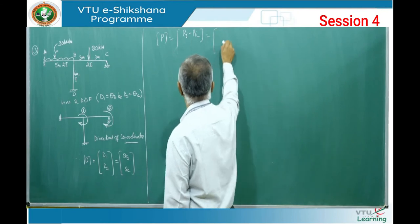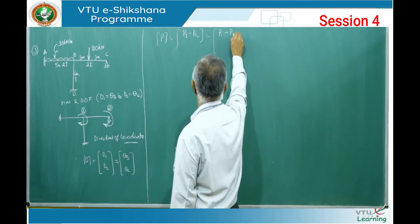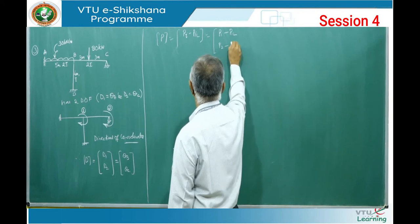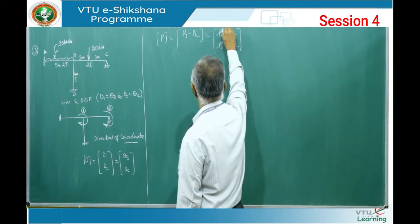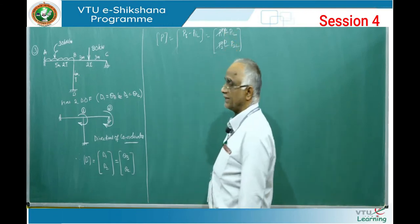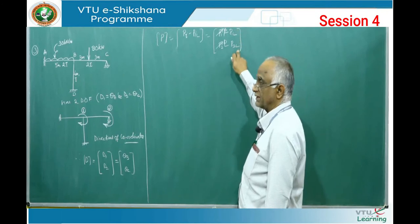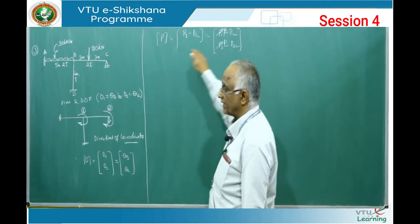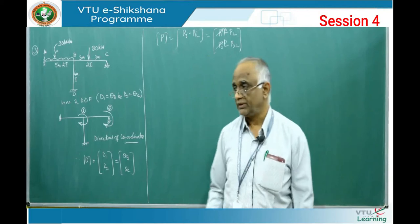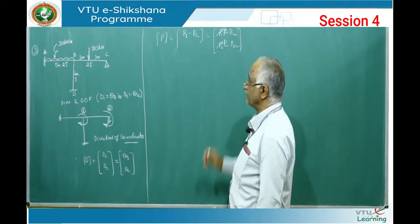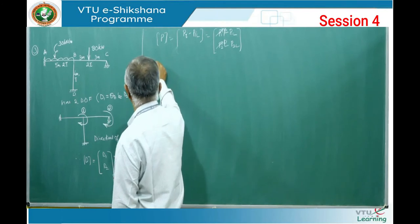In this case there are two degrees of freedom, so it is P1 minus P1L and P2 minus P2L. These two components (P1 and P2) are 0 because there is no applied moment at B and C. So P1L and P2L we have to calculate because there is a load acting on both members AB and BC. We need to find the fixed end moments.